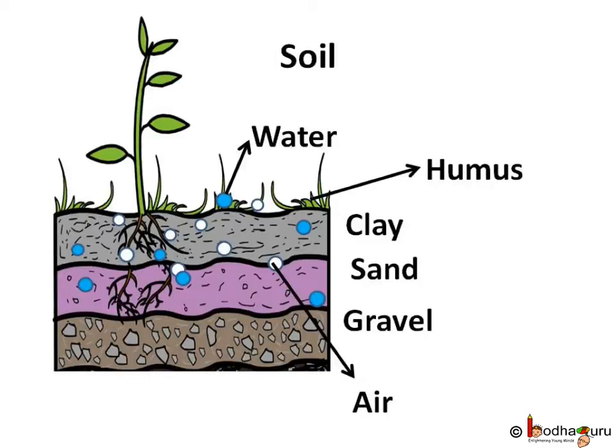In general, the soil consists of small pebbles or gravels. It also consists of sand, clay and other particles. The air and water are also present in the soil. The dead leaves and decayed organic substances found in the soil form the fertile humus part of the soil.